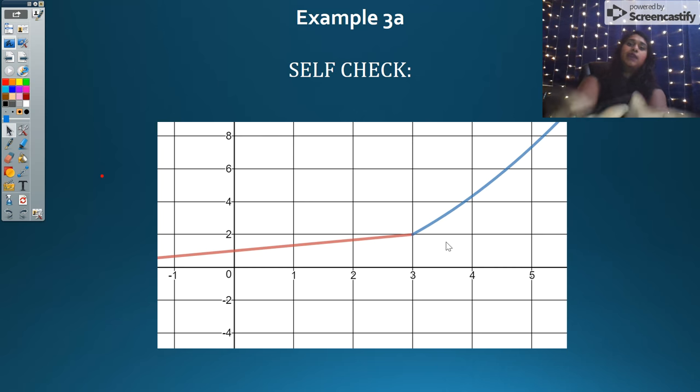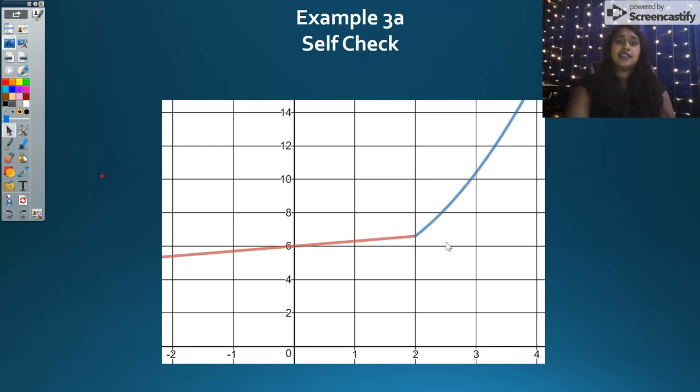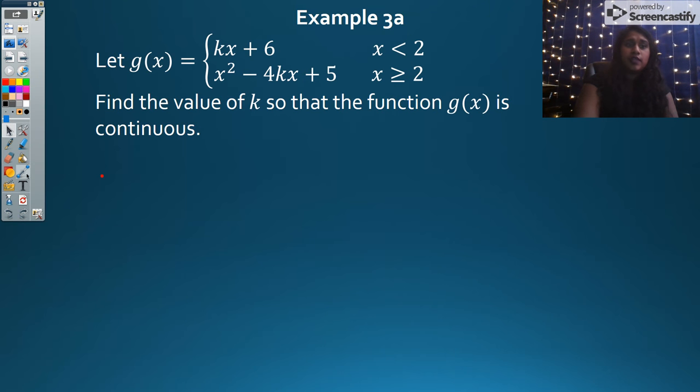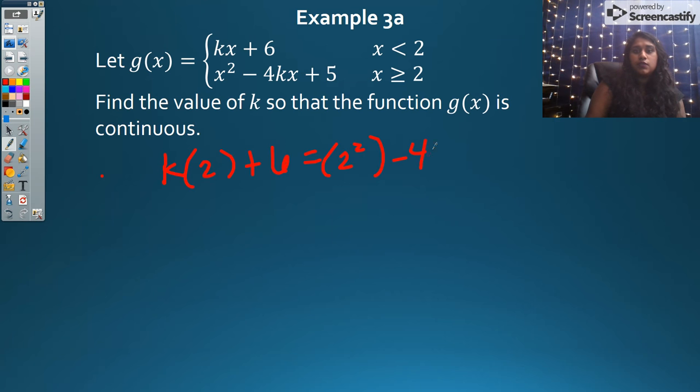But if I'm testing it, I went ahead and plugged it into a graph for you. There we have another one, the exact same method. So I'm going to put K(2) + 6 equals 2² - 4K(2) + 5. That gets me 2K + 6 equals 4 - 8K + 5. Bring my Ks to one side, everything else to the other. So that becomes 2K + 4K equals 4 plus 5 minus 6. This is 6K equals 9 minus 6, 3.